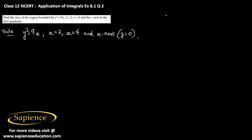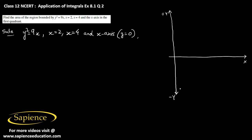First we should draw the approximate graphs of these functions. This is the y-axis and this is the x-axis — the positive y-axis above and the negative y-axis below. Then y squared equals 9x will be something like this. The name of this shape is called a parabola.